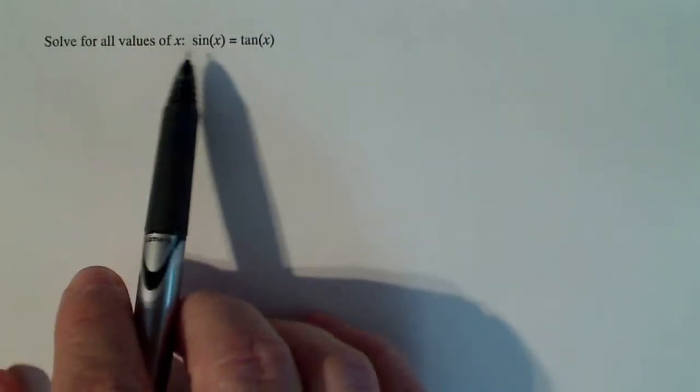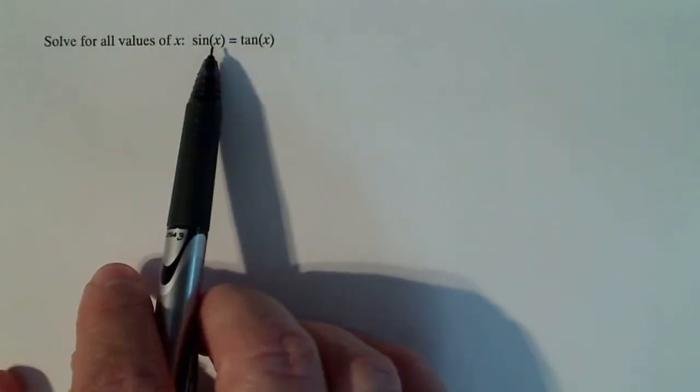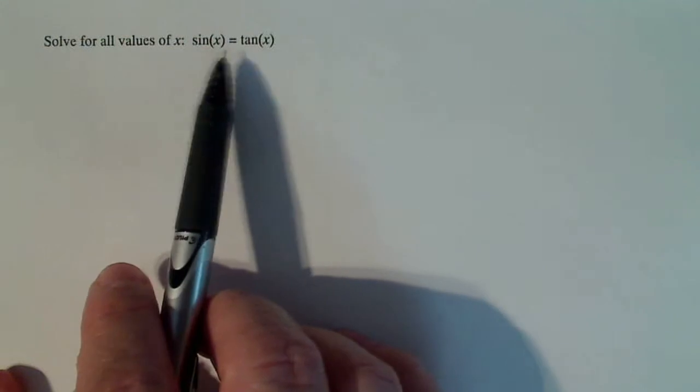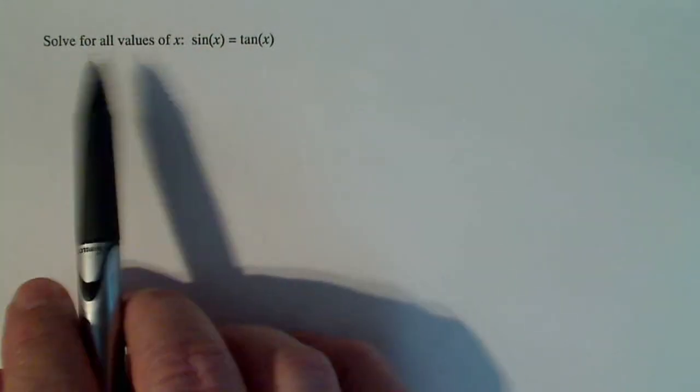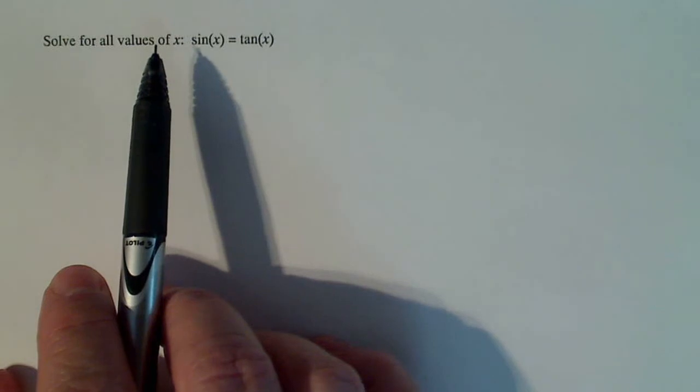Here is a trig identity. No, it's not a trig identity. It's a trig equation. Basically, this is not an identity because this isn't true for all x. Just true for some x's and we're going to try to find out what x's those are.